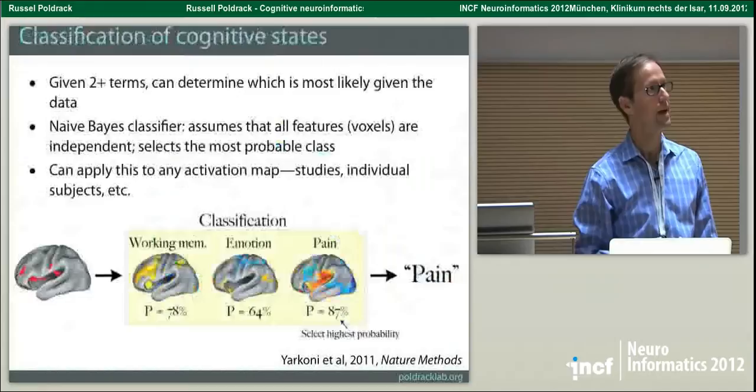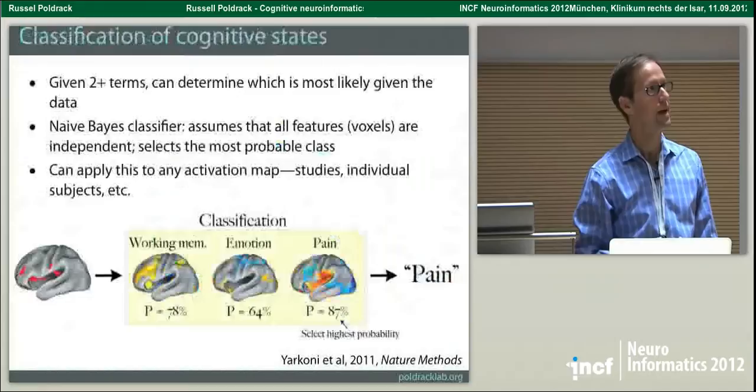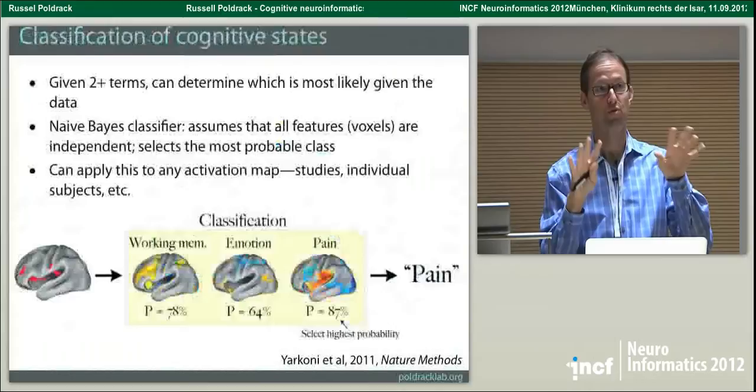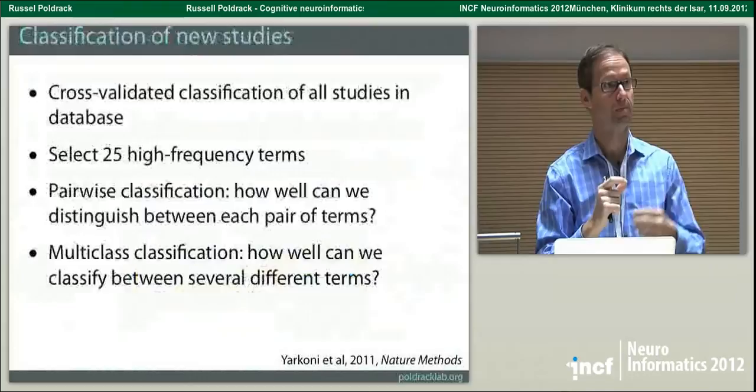This has been used before — for example, Griffiths and Steyvers did some early work showing that you can pull out different parts of the structure of PNAS papers by doing topic modeling on the abstracts. It's really sensitive to the use of different terms together. It's actually an amazingly powerful tool when you start working with it.